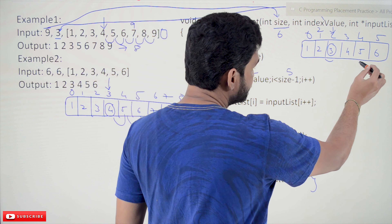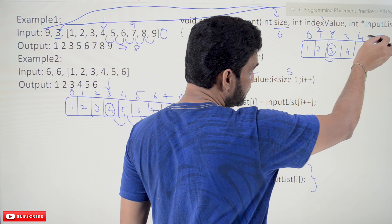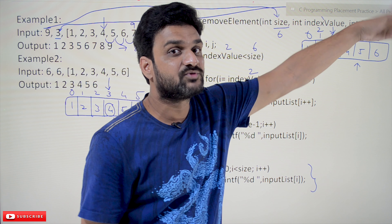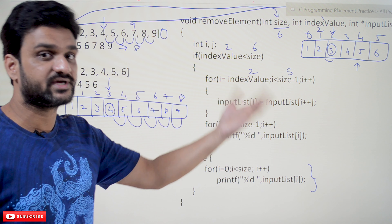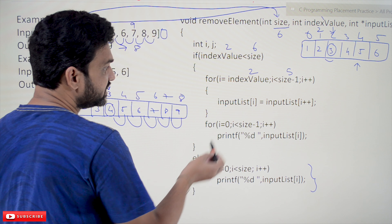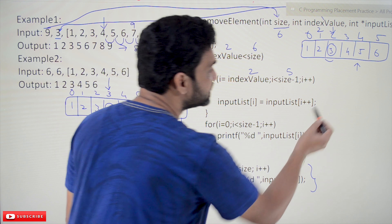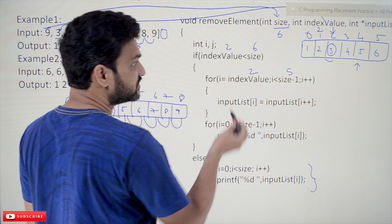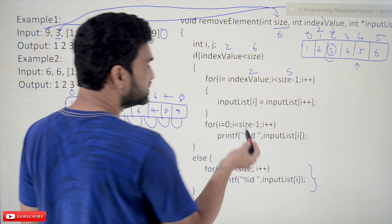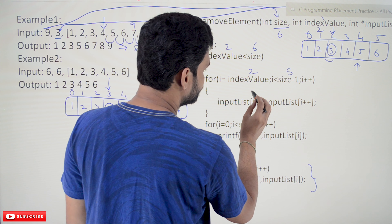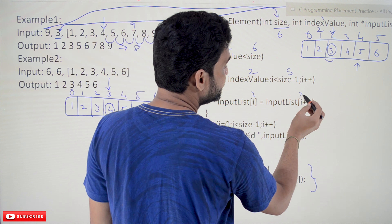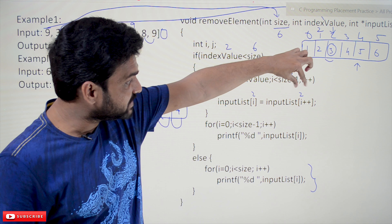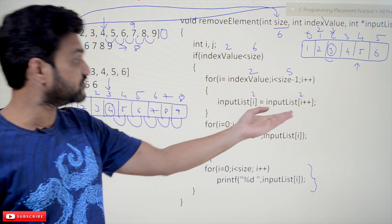Until size minus 1 we fetch elements; after that we are not concerned about the last element. Inside the loop: inputList[i] = inputList[i++]. This is a crucial point. We've started with i equal to 2. The post-increment means the value of i is taken first, and the increment happens after the entire statement is evaluated.